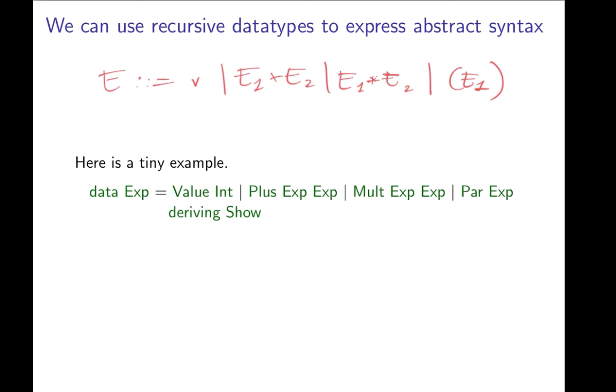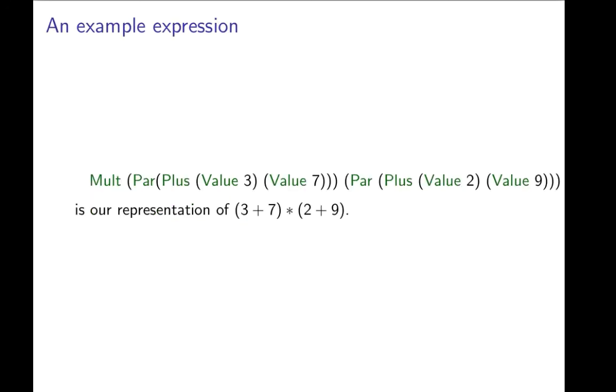Given this, we can then write 3 plus 7 in parenthesis times 2 plus 9 as this rather large value. So, of course, one would probably want to have a pretty printing function that would pretty print this as a string. Conversely, we would probably also want to have a parser that could take a string representation and return a value of the data type.